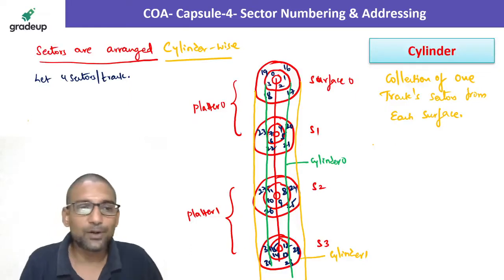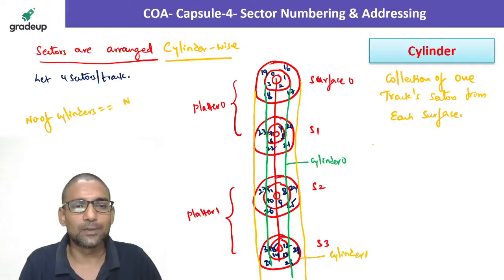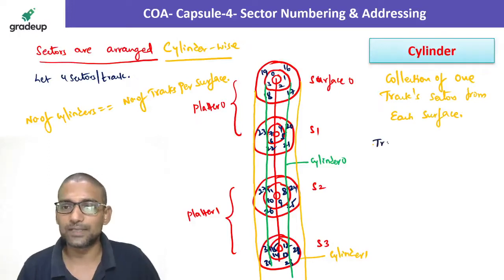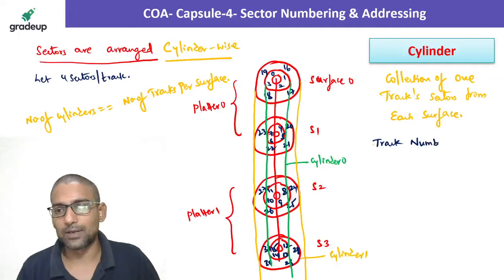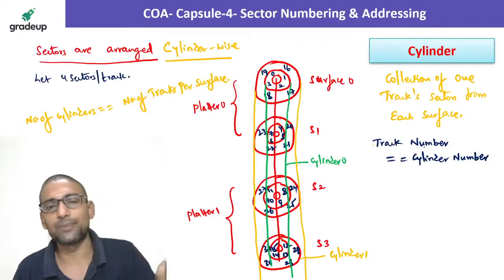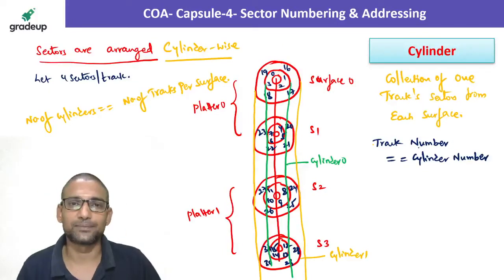Number of cylinders is equal to number of tracks per surface. Also, track number and cylinder number will be same. Track number will always be equal to cylinder number because all track zeros together is cylinder zero. All track ones from every surface together is cylinder one. On one surface, how many tracks are there? Total, those many cylinders will be there. I hope cylinder concept is clear.